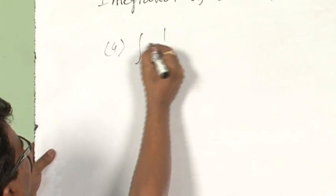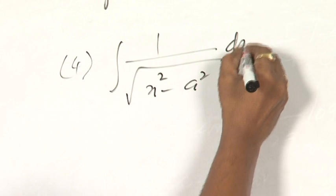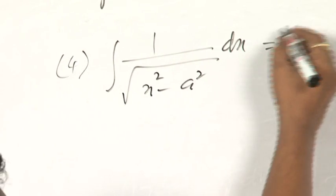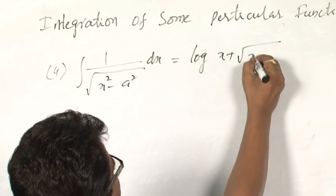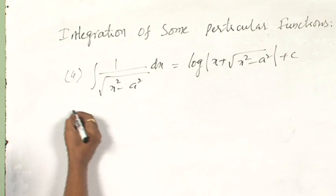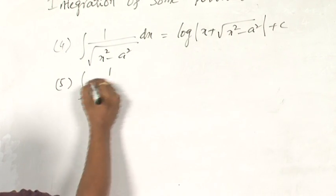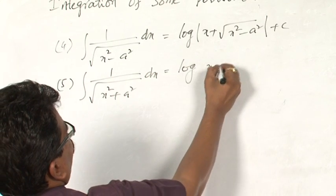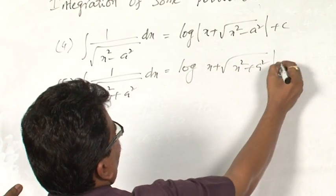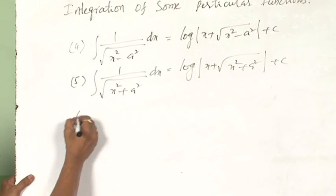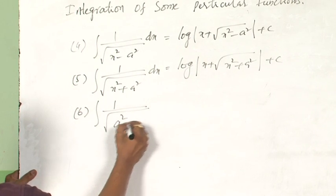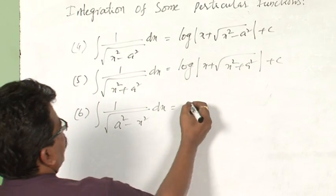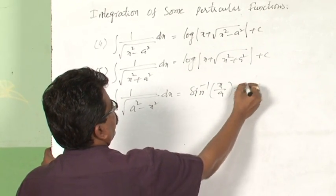The fourth one is integral 1 by root of x square minus a square dx. The integration for this function is log |x plus root of x square minus a square| plus c. If the integrand is of the form 1 by root of x square plus a square dx, then the integration will be log |x plus root of x square plus a square| plus c. The integration of 1 by root of a square minus x square is sin inverse x by a plus c.